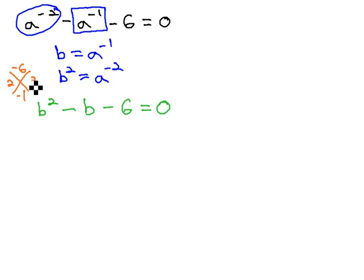This works with 2 and 3 if the 3 is negative. And because there's a 1 in front of b squared, we can jump to those being our factors, b plus 2 and b minus 3 equals 0.